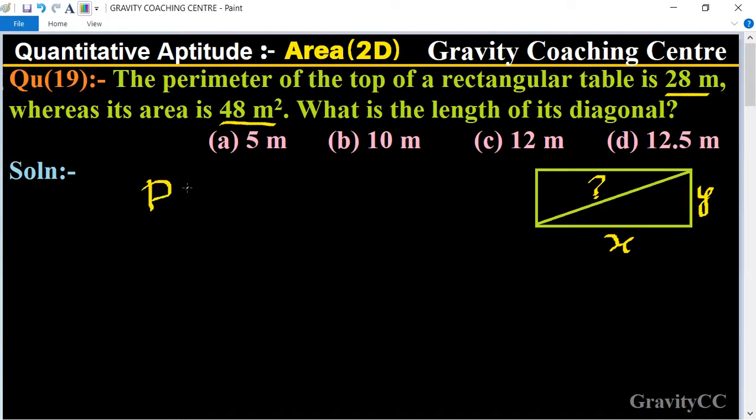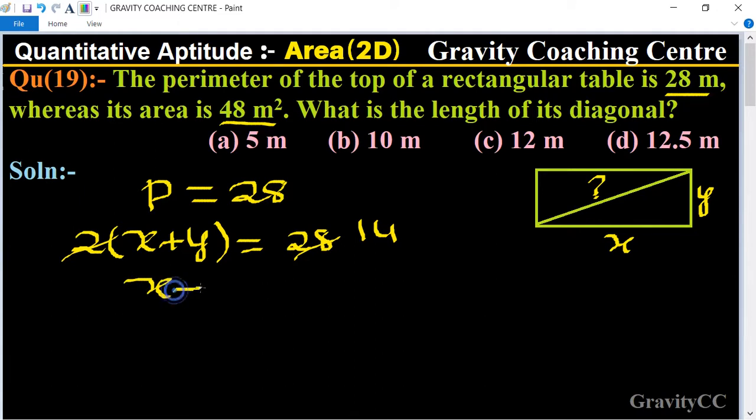the perimeter is given, perimeter is 28 meters, and we know that the formula of perimeter is 2 times x plus y equal to 28, and 28 divided by 2 gives us x plus y equal to 14